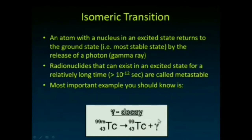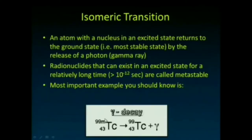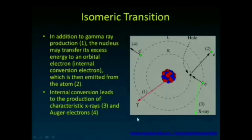Technetium-99m is a real outlier because it exists in that excited state for quite a bit of time — its half-life is around six hours. What's nice about isomeric transition is that we get decay to that stable state with the release of a gamma ray.